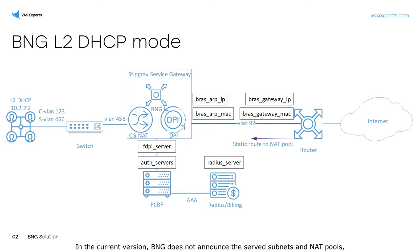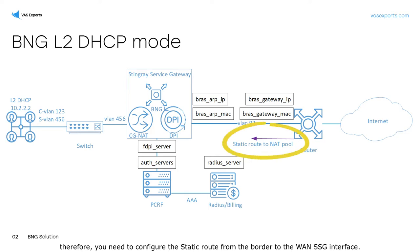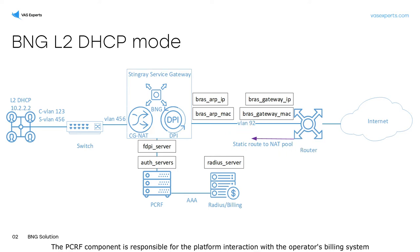In the current version, BNG does not announce the served subnets and NAT pools. Therefore, you need to configure the static route from the border to the WAN-SSG interface.